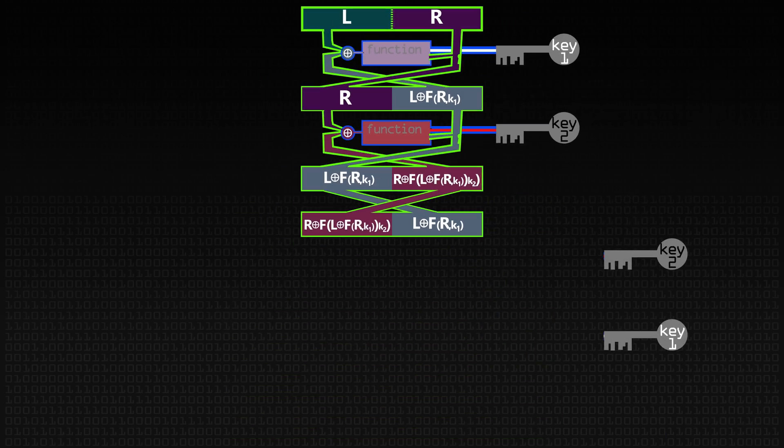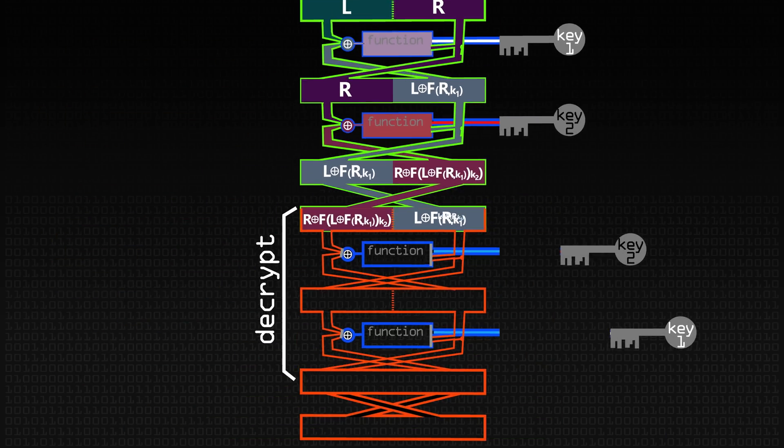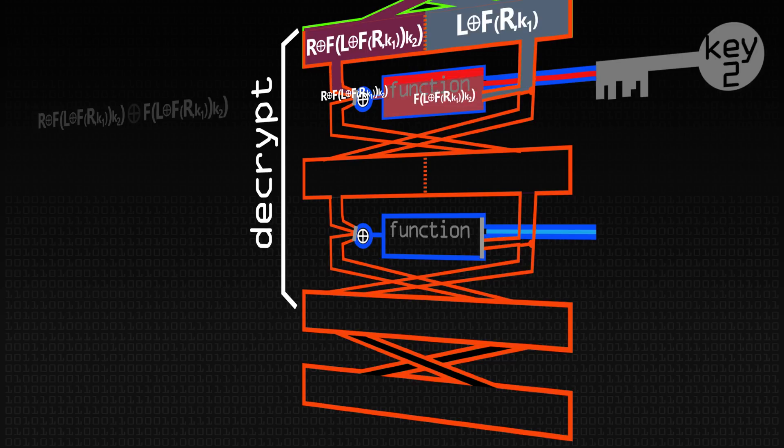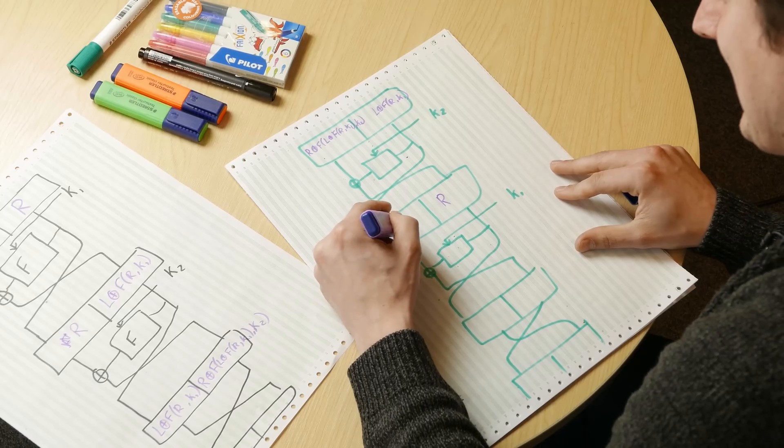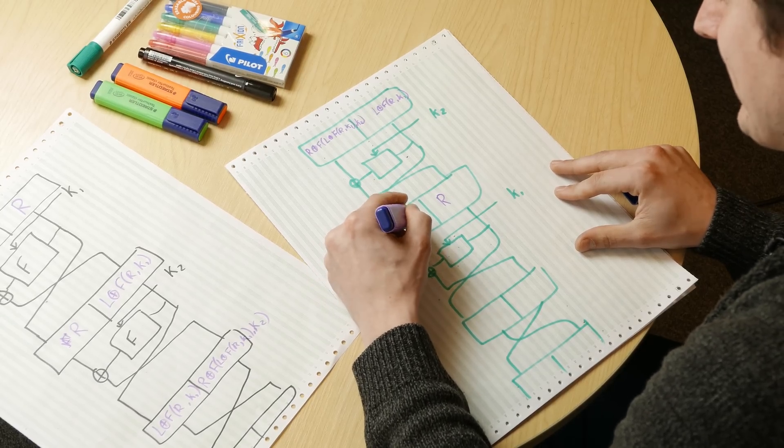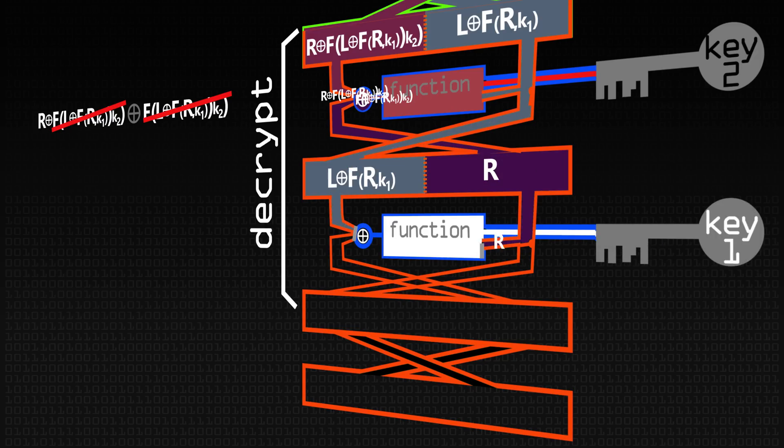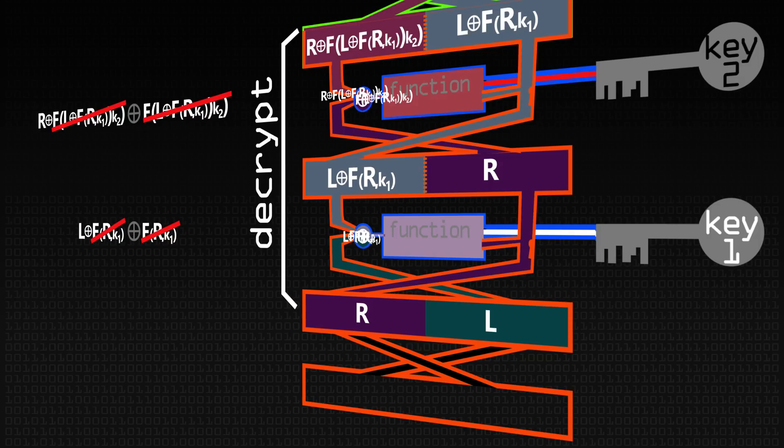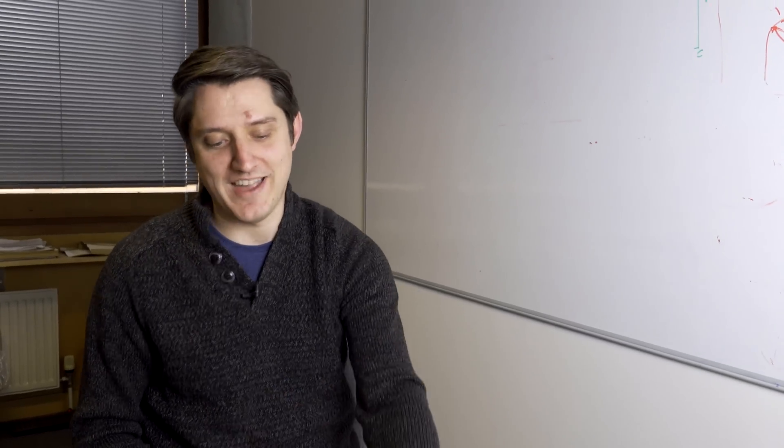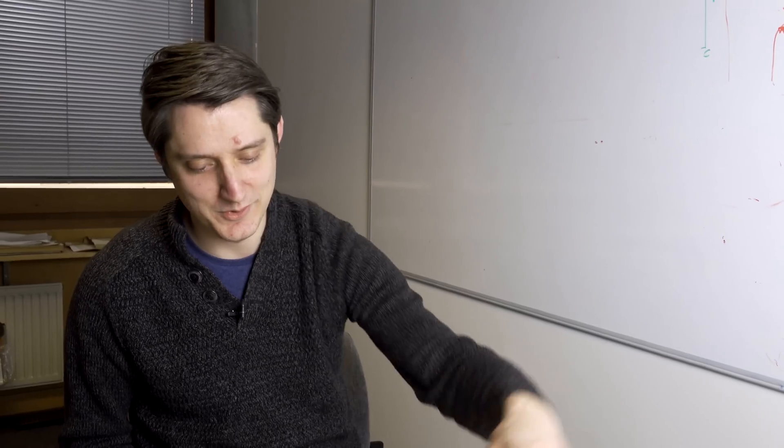So what happens here is L F of R K1 is going to come through here and turn into F of L F of R K1 K2, which is this bit. So that's going to come in XOR with this and we're just going to get R out again here. This gets copied down here, so L XOR F of R K1. So let's go again. R comes in here, it becomes F of R K1. XOR with this, this becomes L. R gets passed down here, L goes to here, R goes to here. And this will work for any number of rounds and for any round function, which is super cool.